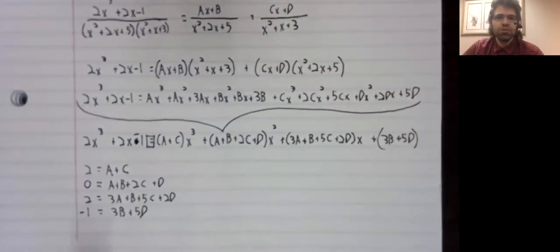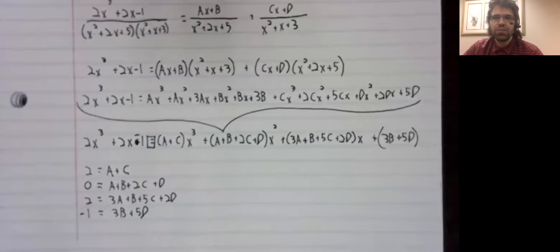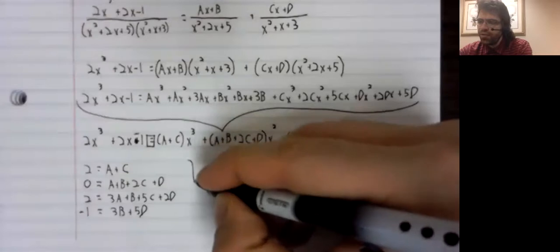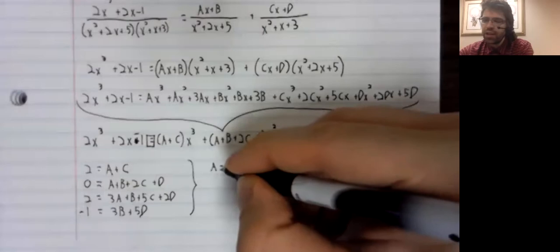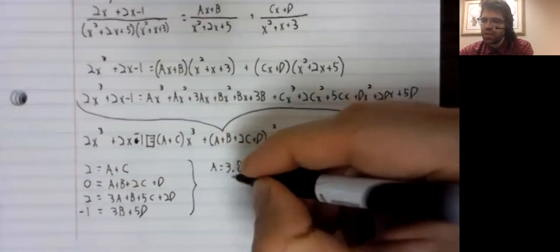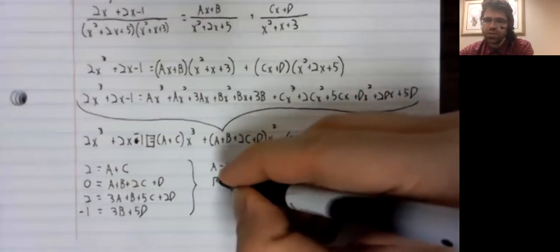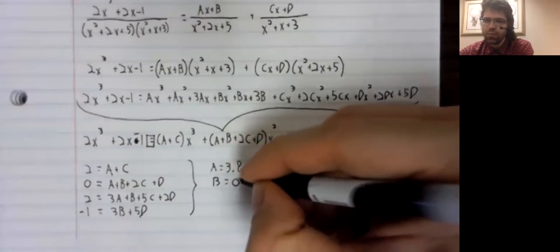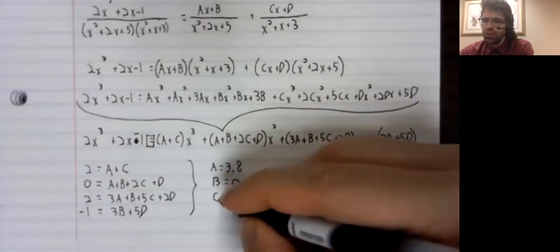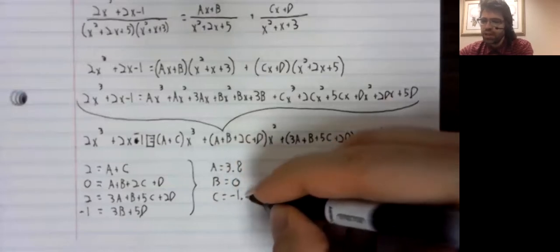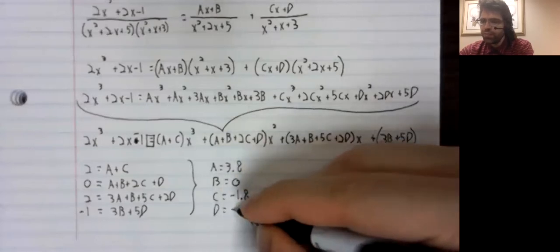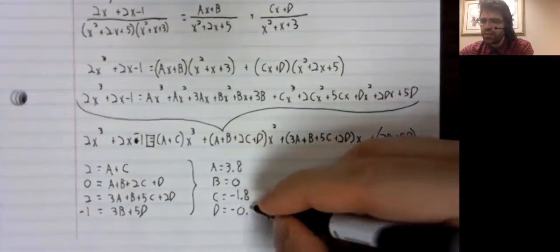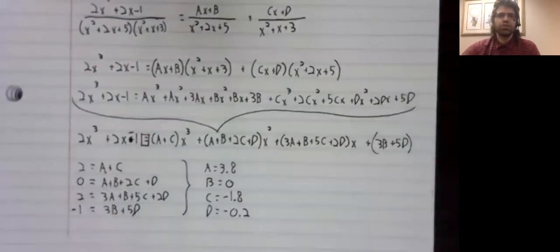If we do solve it, we find that A equals 3.8, B equals zero, C equals negative 1.8, D equals negative 0.2.